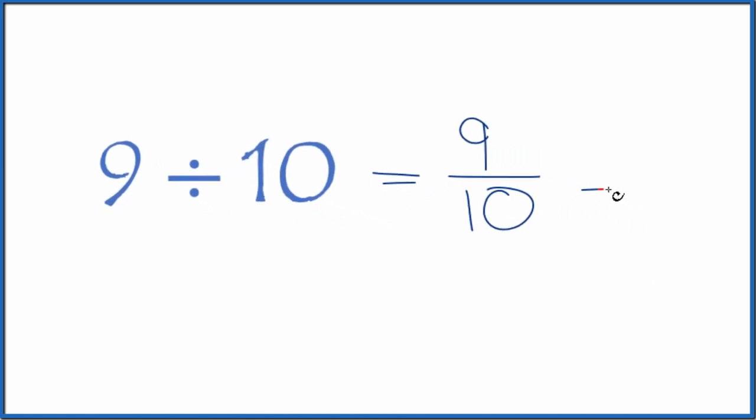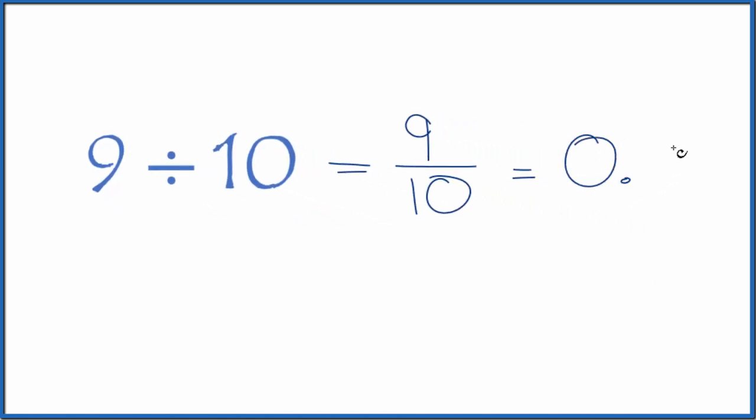9 divided by 10, that equals 0.9. So 9 divided by 10 equals the fraction 9 tenths or the decimal 0.9. And we could also do this longhand. We could take 9 and see how many times 10 goes into 9.